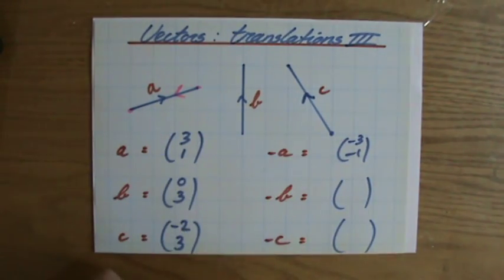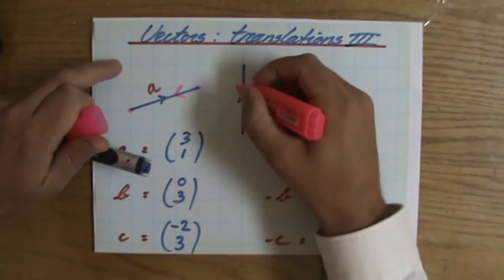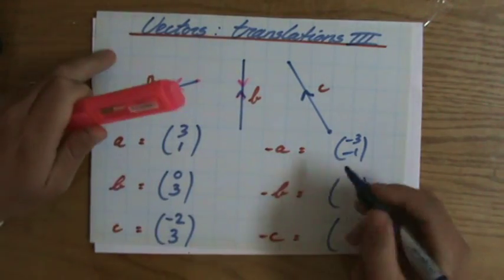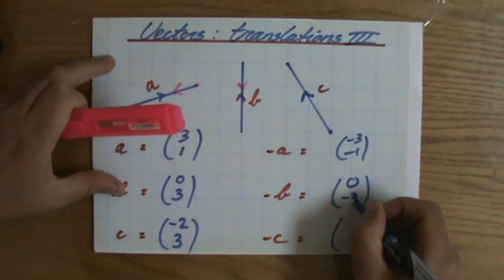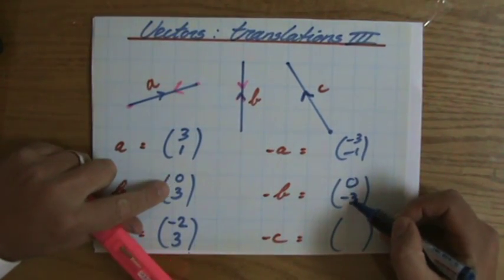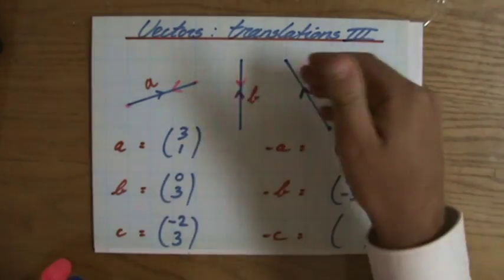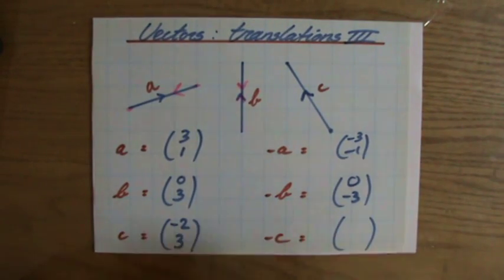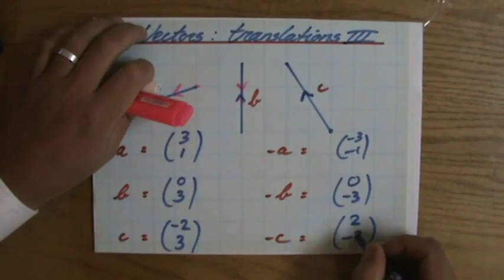Is that the same for b? So minus b — if I change the direction, rather than going up I'm going down, my horizontal translation is still zero, and now I'm going one, two, three down, so minus three. As you can see, those are the same numbers with opposite signs — zero minus zero naturally stays the same. Without looking at my picture: if c is (-2, 3), then minus c is going to be (2, -3).